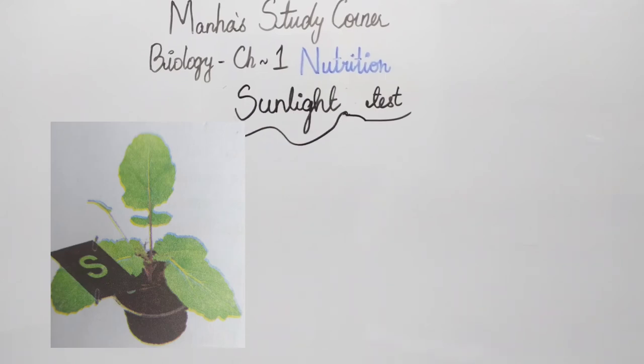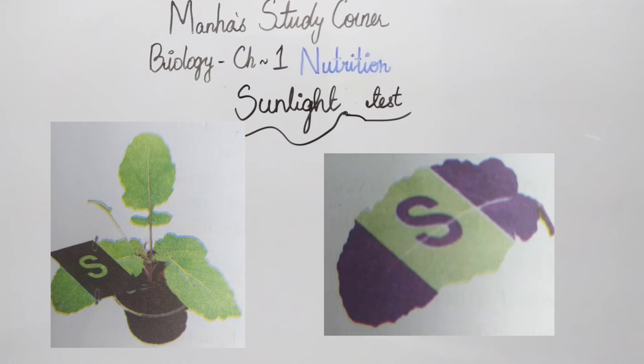So we have also discussed how sunlight is absolutely necessary for photosynthesis. Let's prove this one as well experimentally. For this, we will take a normal plant and destarch it. Then we will take a black paper and cover just a part of the leaf. Let's leave this setup in the sun for a few hours. We will then remove the black paper and test this leaf for starch.